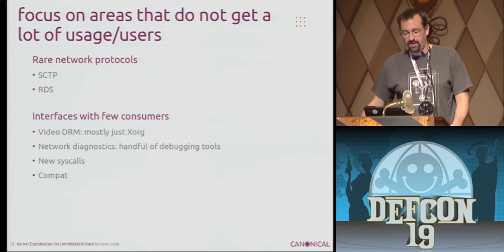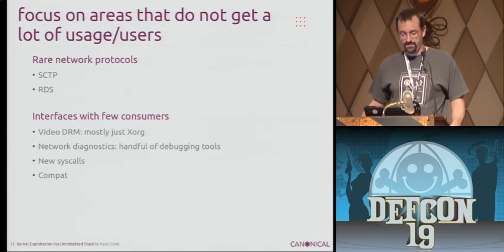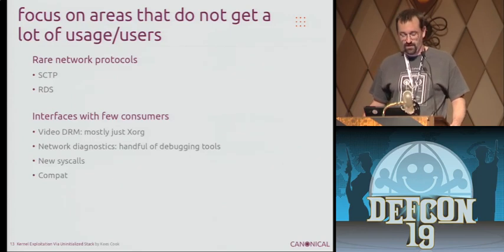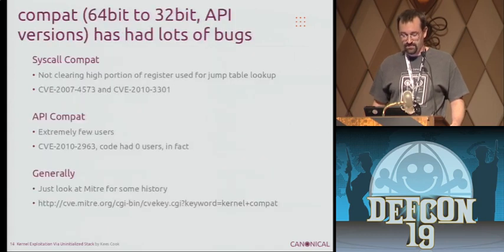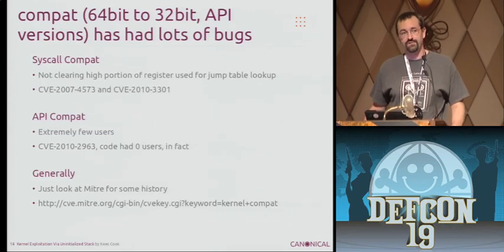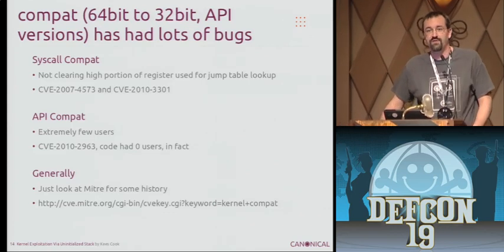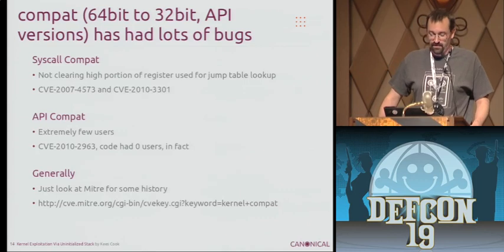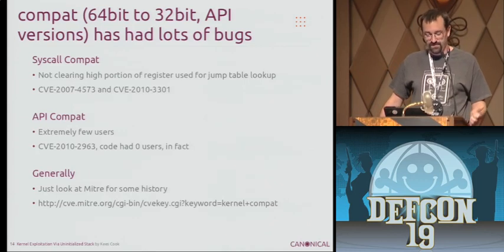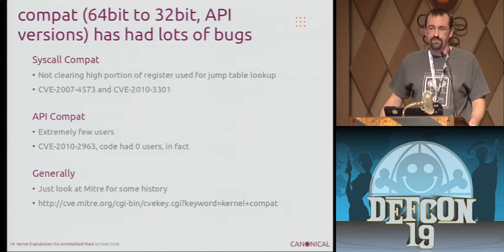I tried to focus on areas that didn't have a lot of usage or users. There have been plenty of vulnerabilities in rare network protocols or interfaces with not a lot of consumers — especially compat interfaces. When you're dealing with running 32-bit on a 64-bit system, or different API versions like the Linux video stuff, there are a lot of issues. In fact, the issues are so bad that problems come back: CVE-2007-4573 and CVE-2010-3301 are the same issue — they just reintroduced it three years later.